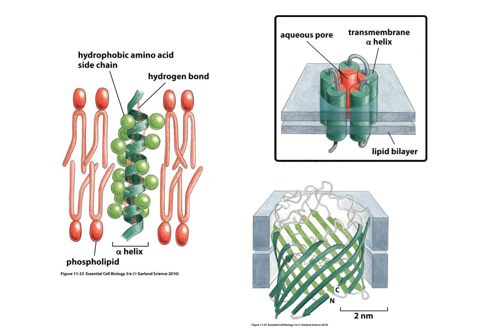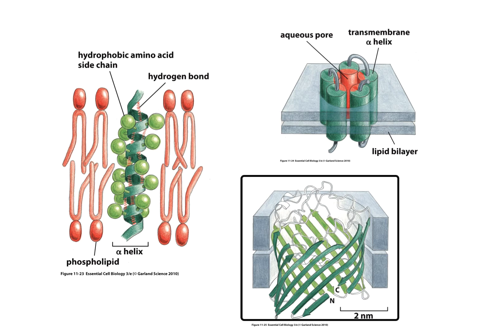If alpha helices form a pore, they arrange in a ring structure where the outside of the ring is hydrophobic but the internal pore is hydrophilic — an aqueous pore allowing transport of hydrophilic molecules through that central part. The same applies to beta barrels: the outer amino acids are hydrophobic, interacting with the lipid bilayer, while the middle pore of the beta barrel is hydrophilic, allowing molecules dissolved in water to move from one side of the membrane to the other.